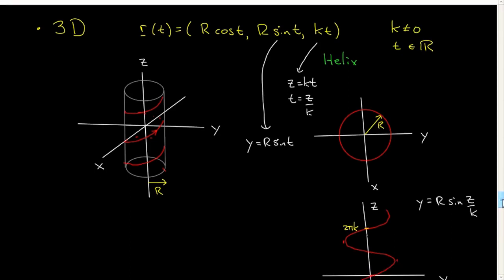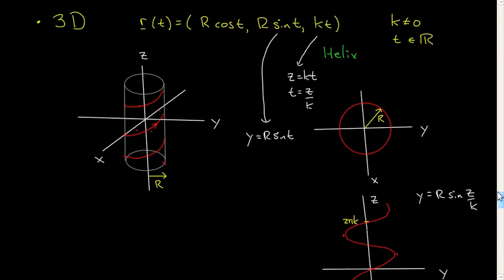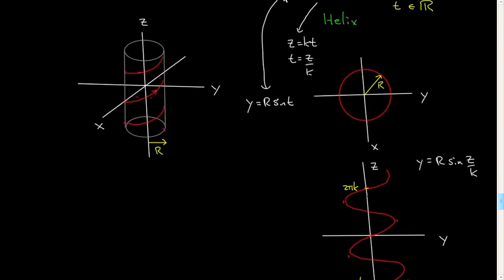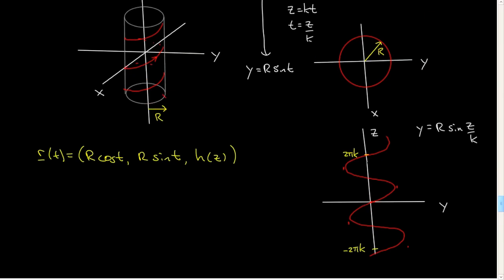I will just emphasize this point about the, in this case, the cylinder. So if I had a parameterization, r of t is equal to r cos t, r sin t, and then some just general function, h of z, z, then whatever this h of z is, I know that in terms of x and y, I have a circle and therefore, whatever this curve is, it must lie on a cylinder.